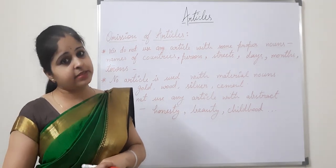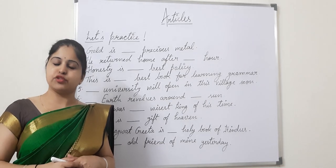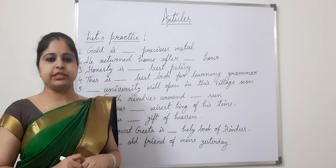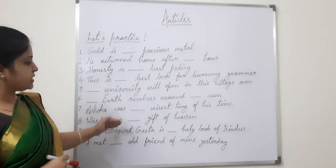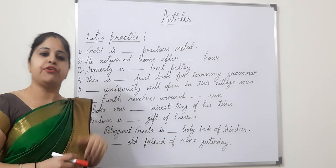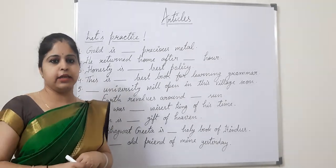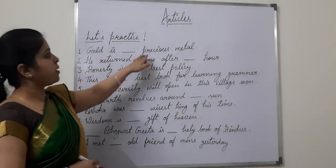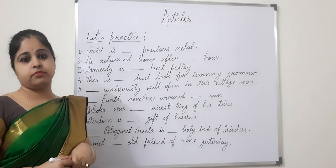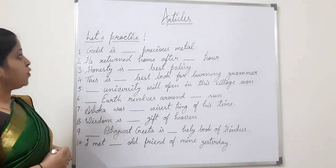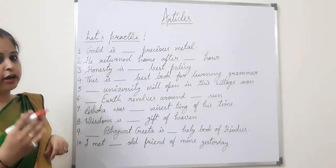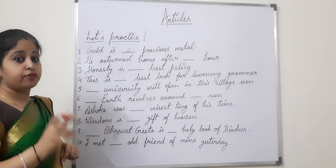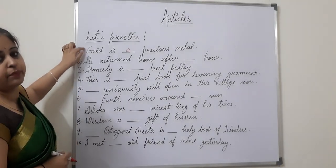Let's practice! Children, it's time to practice whatever we have learned about articles. With the help of these sentences, we will recall what we have learned. First sentence: 'Gold is a precious metal.' We have not put anything before 'gold' because we do not use any article before material nouns.